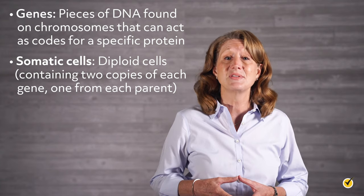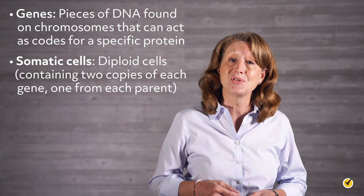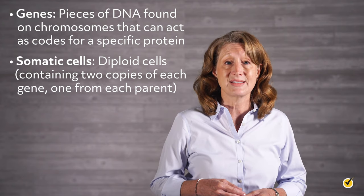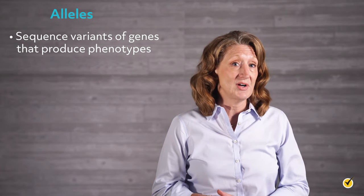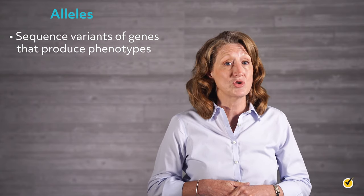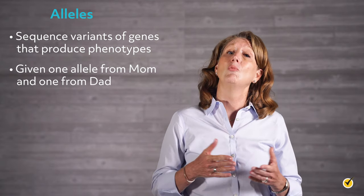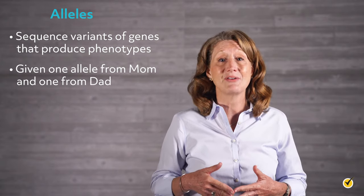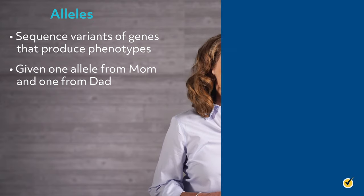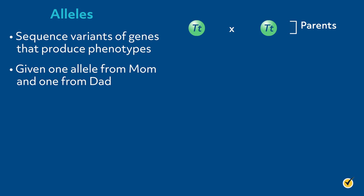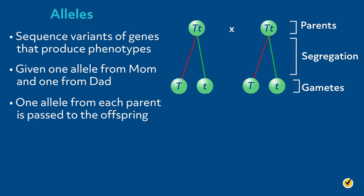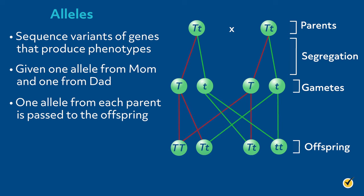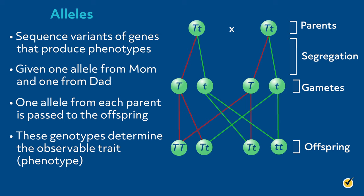It depends on the random separation of alleles during meiosis and the random recombination of these alleles during fertilization. Alleles are sequence variants of a gene that produce a certain observable trait, or phenotype. We have one allele from mom and one allele from dad for each trait. Mendel's Law of Segregation states that the parent's allele pairs separate randomly, and only one allele from each parent is passed to the offspring. The combination of these alleles is the genotype, which determines the observable trait, or phenotype.